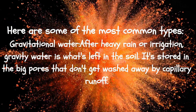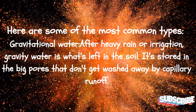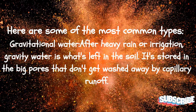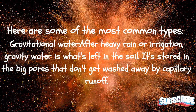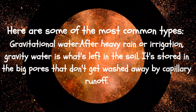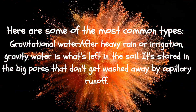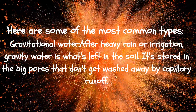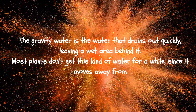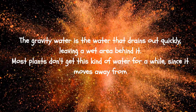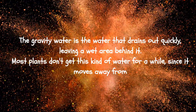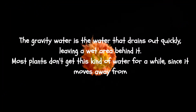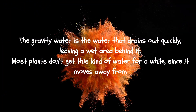Gravitational water: after heavy rain or irrigation, gravitational water is what's left in the soil. It's stored in the big pores that don't get washed away by capillary runoff. The gravitational water is the water that drains out quickly, leaving a wet area behind it.